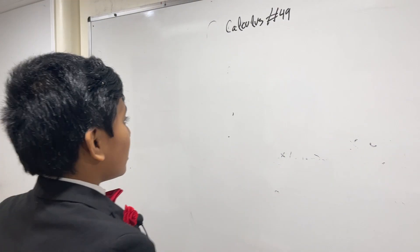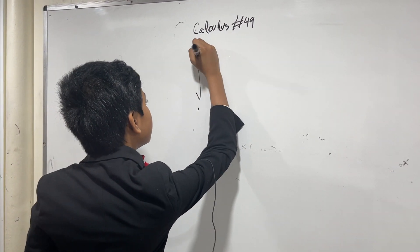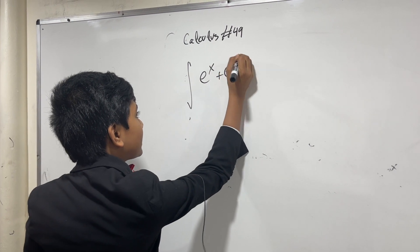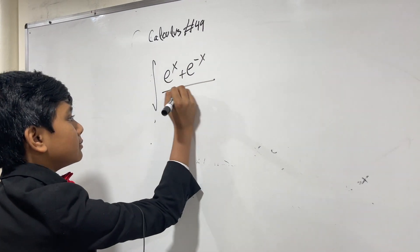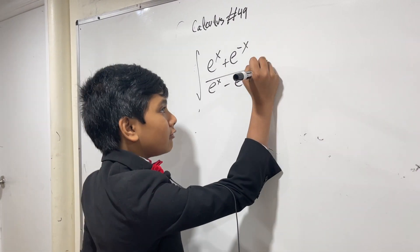Okay. So today we're going to be doing e to the x plus e to the minus x over e to the x minus e to the minus x, all right, dx. How do we do this one?